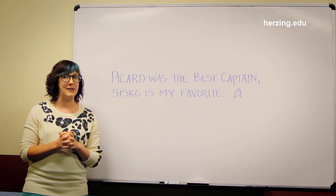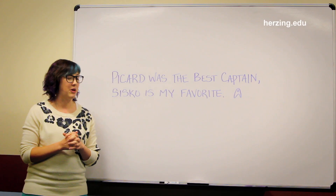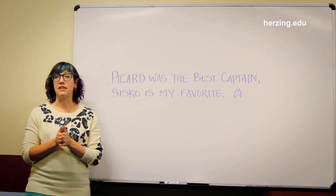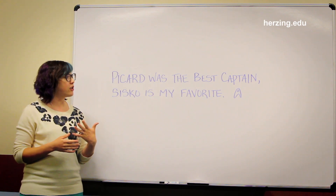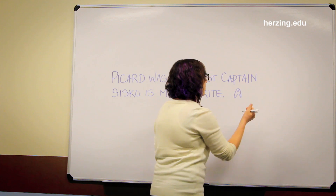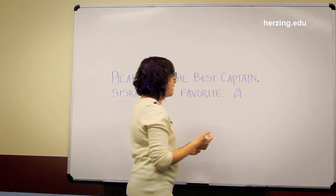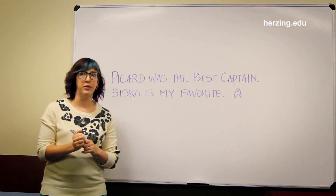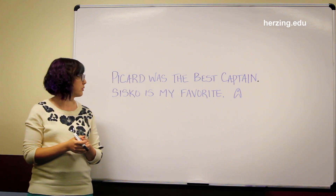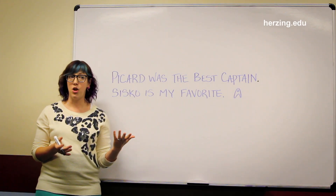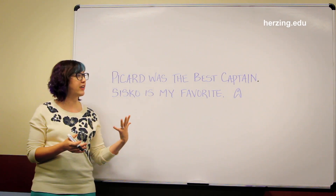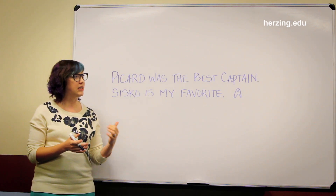The reader might be a little bit confused as to how these two thoughts are related. There are three ways that you can fix a comma splice. The first way is to take your comma and replace it with a period. Now we have two complete thoughts, two complete sentences, no comma splice. This is a perfectly acceptable fix.